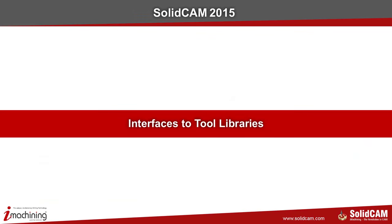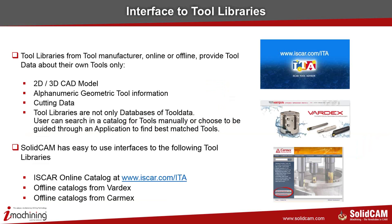Coming to the next step — interfaces to tool libraries. When we are talking about tool libraries, we're talking about an offer from tool manufacturers providing their tool data online or offline with cutting conditions to be downloaded and used. Mostly it's 2D and 3D cut models, alphanumeric geometry, tool information, and cutting data with material combinations. A key feature is that you are guided by an application — each tool manufacturer has its own assistance to find the best tool.